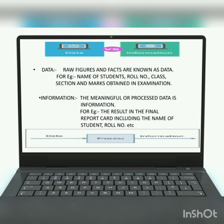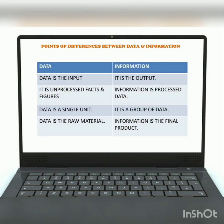Now let's chalk out some points of difference between data and information. Data is the input and information is the output. Data is unprocessed facts and figures, while information is processed data. Data is a single unit; on the other hand, information is a group of data. Data is the raw material, while information is the final product.